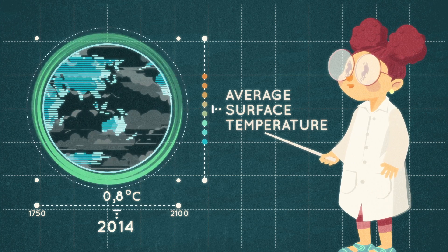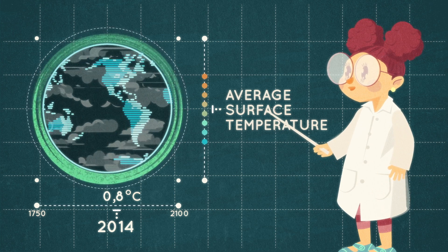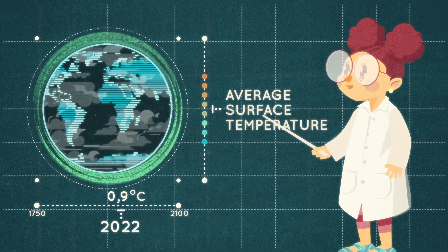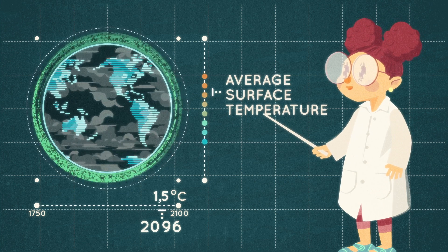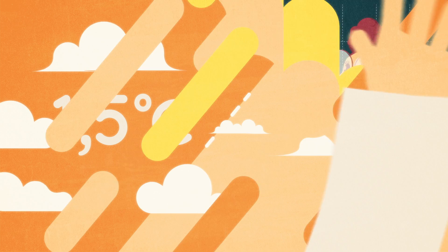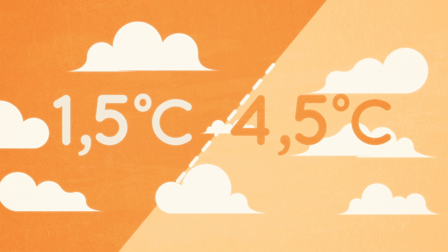When carbon dioxide concentrations in the atmosphere have doubled, which is expected before the end of the 21st century, researchers project global temperatures will have risen by 1.5 to 4.5 degrees Celsius.